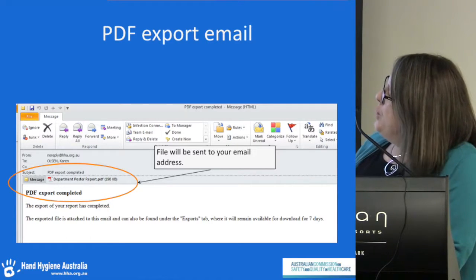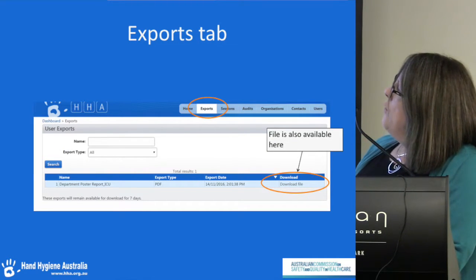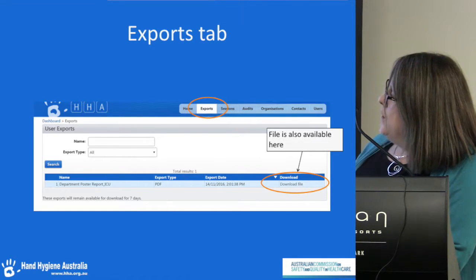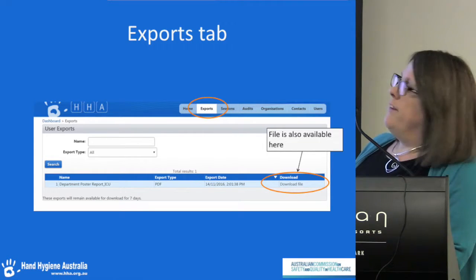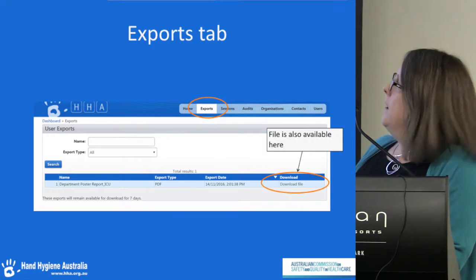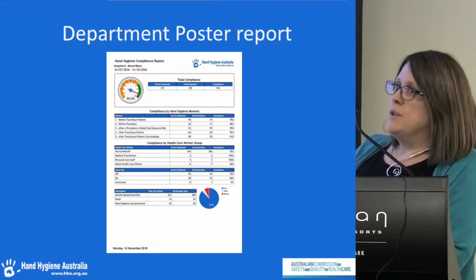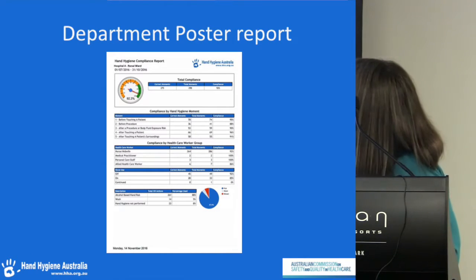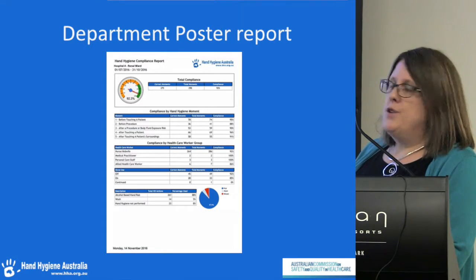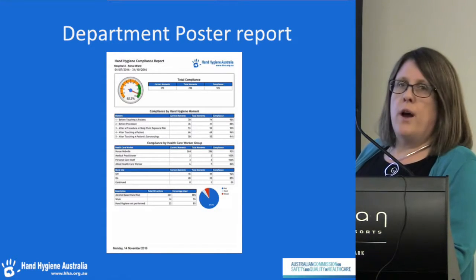The file will be sent to your email address as a PDF, which you can open directly. You can also access the file from the new exports tab across the top — clicking it shows a list of downloads you've run, available for seven days before they disappear. This is what the new department poster looks like: it gives compliance by moment, by healthcare worker, and some extra details. In most cases it will print as one page; it will only run to a second page if you have a very long list of healthcare workers.